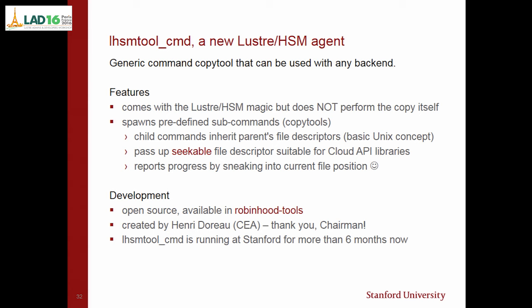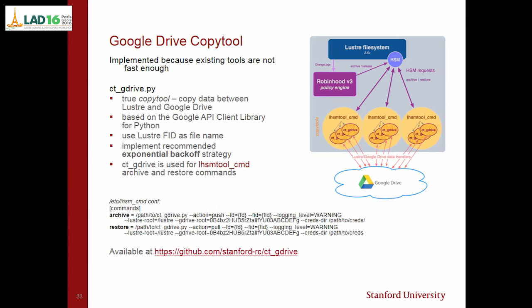As a subcommand, we used a Google Drive copy tool that we developed. At first we used a Google Drive CLI that already existed, but the overhead was too high — it does plenty of things we don't need. We just need a copy tool that puts data to Google Drive and uses the feed as a name. It's very simple: it uses the Google API client library in Python, uses the file descriptor as a name, implements an exponential backoff strategy on top of that to be more robust, and is compatible with lhsm-cmd. It's available open source on GitHub.